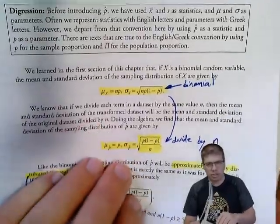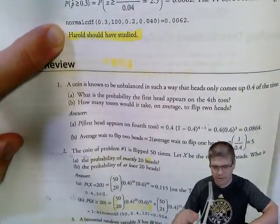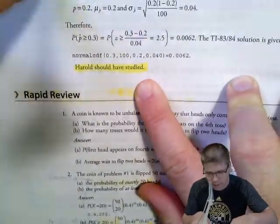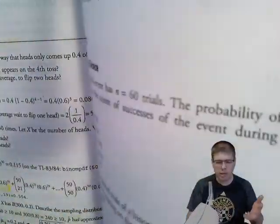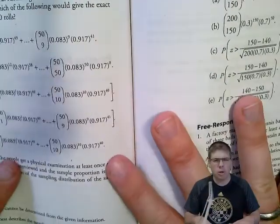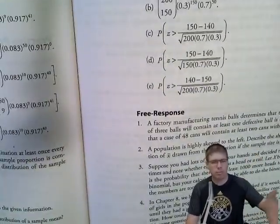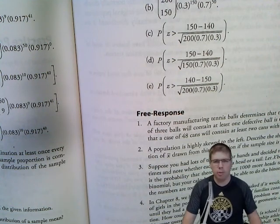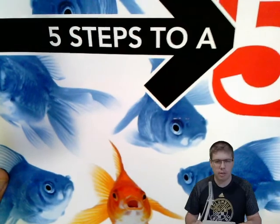Inference is the meat of AP Statistics. One thing I highlighted: Harold should have studied — there's a problem about someone guessing on every question, and statistically it's basically impossible he'd get above 30%. Take a look at the rapid review questions. On the AP test, binomial and geometric problems are often embedded in larger multi-part problems — like 'using the probability from part B, do a binomial calculation in part C.' If you can't do the earlier part, just make up a reasonable value and use it.